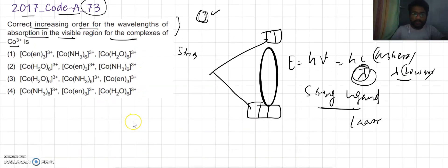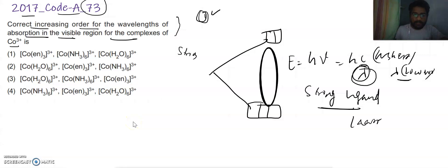Now according to the spectrochemical series, En is the strongest ligand among all these, afterwards NH3, again afterwards H2O.